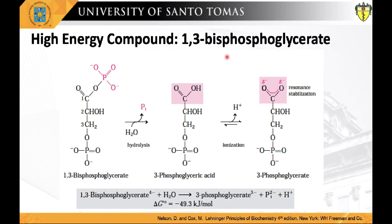Another high-energy 3-carbon compound is 1,3-bisphosphoglycerate, which contains an anhydride bond between the carboxyl group at C1 and phosphoric acid. Hydrolysis of this acyl phosphate is accompanied by a large negative standard free energy change of negative 12.3 kilocalories per mole, or negative 49.3 kilojoules per mole. When water is added across the anhydride bond, one of the direct products, 3-phosphoglycerate acid, can immediately lose a proton to give the carboxylate ion, 3-phosphoglycerate, which has two equally probable resonance forms. Removal of the direct product and formation of the resonance-stabilized ion favor the forward reaction.